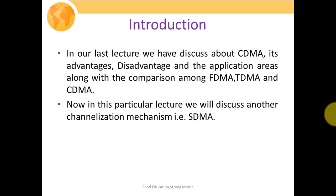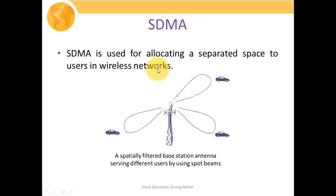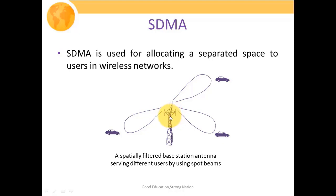Moving forward, in this lecture we will discuss another channelization mechanism: space division multiple access, or SDMA. SDMA is used to allocate separated space to users in the wireless network. To restrict interference, we must ensure no two users transmit at the same time, or on the same frequency band, or in the same space.